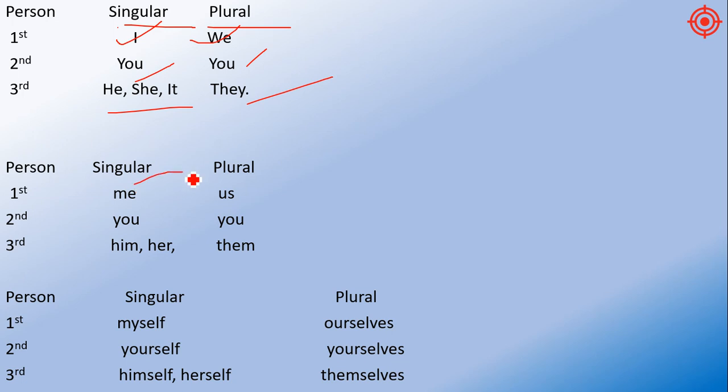For objective case: 'me' and 'us', 'you' and 'you', 'him, her' and 'them'. For reflexive pronouns: 'myself' and 'ourselves', 'yourself' and 'yourselves', 'himself, herself' and 'themselves'. Everything there must be used here in direct and indirect speech.